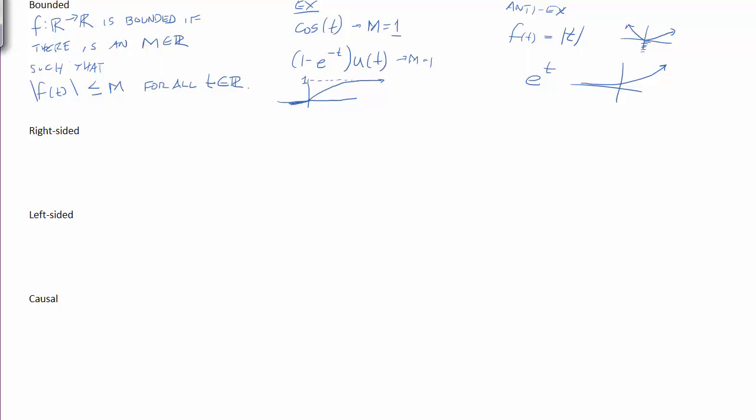A right-sided signal is a signal that is only active to the right of a certain value. So in math speak, that would be f, which maps from the reals to the reals, is right-sided if there is some a in the real number line such that f of t equals 0 for all t less than a. So again, there has to exist some point in the real number line that to the left of that point, the function is inactive, so to speak. The function only takes 0 values.